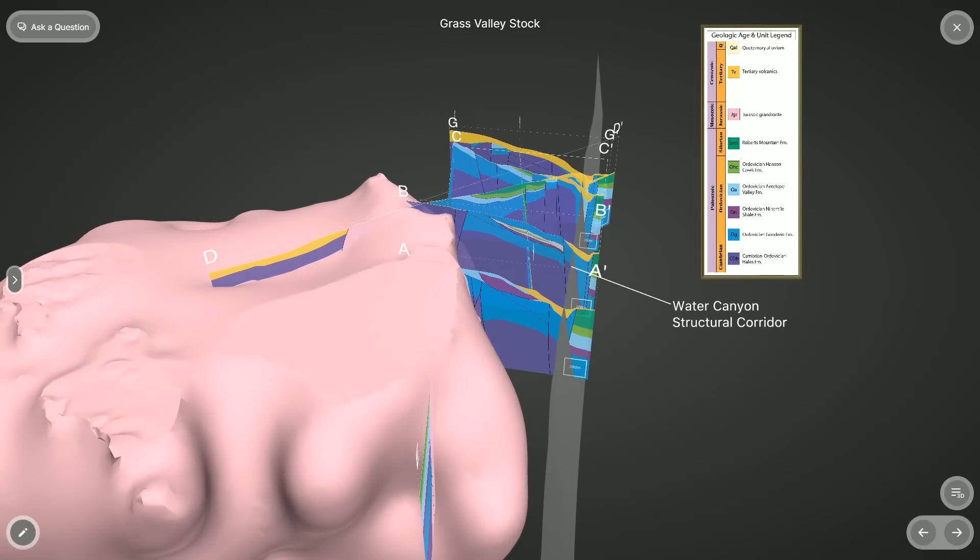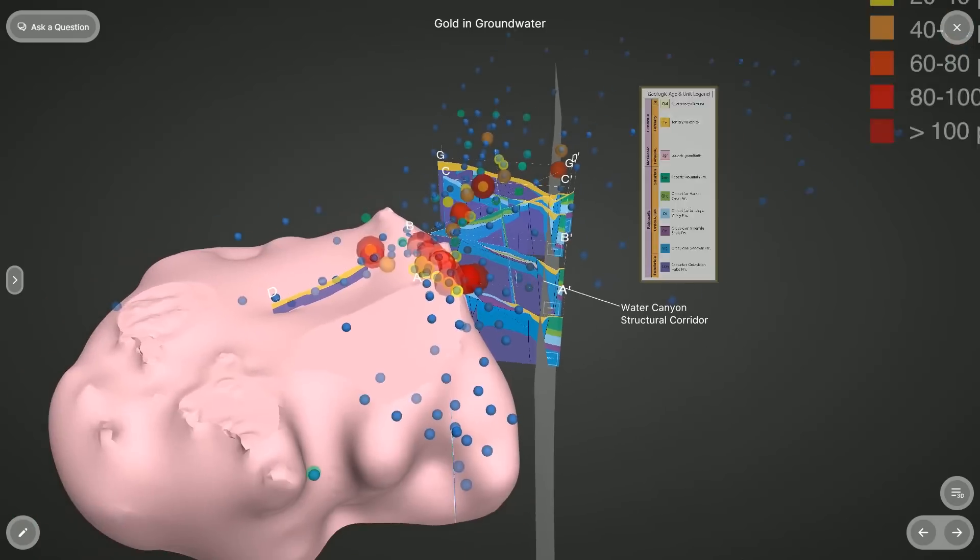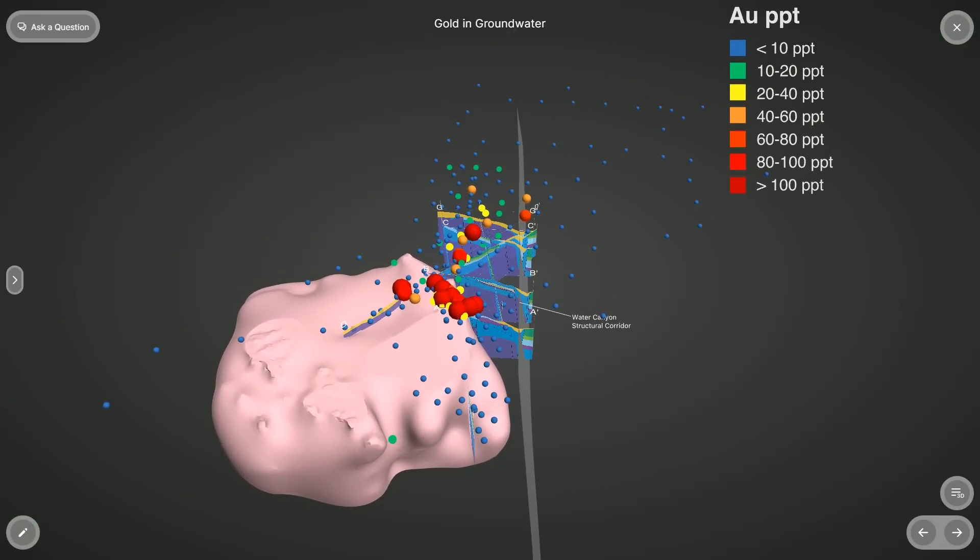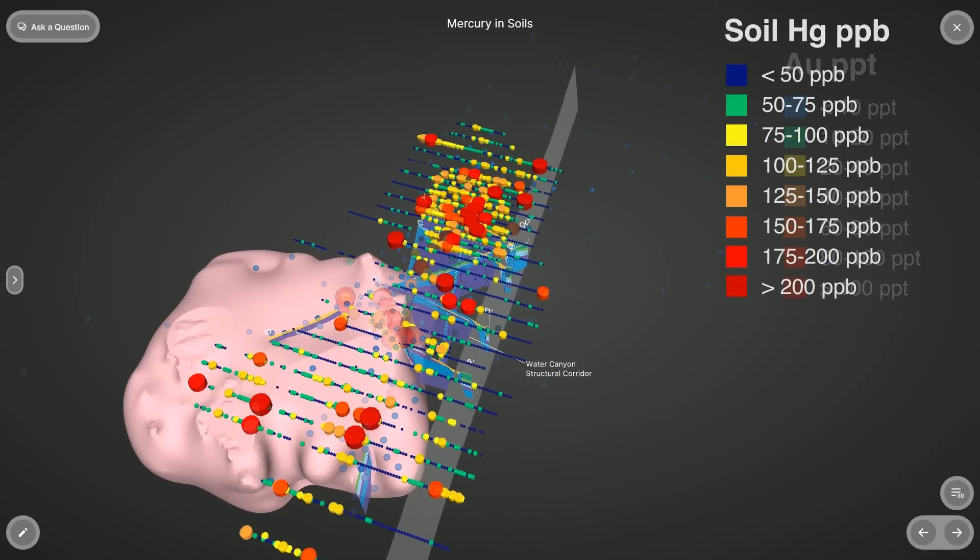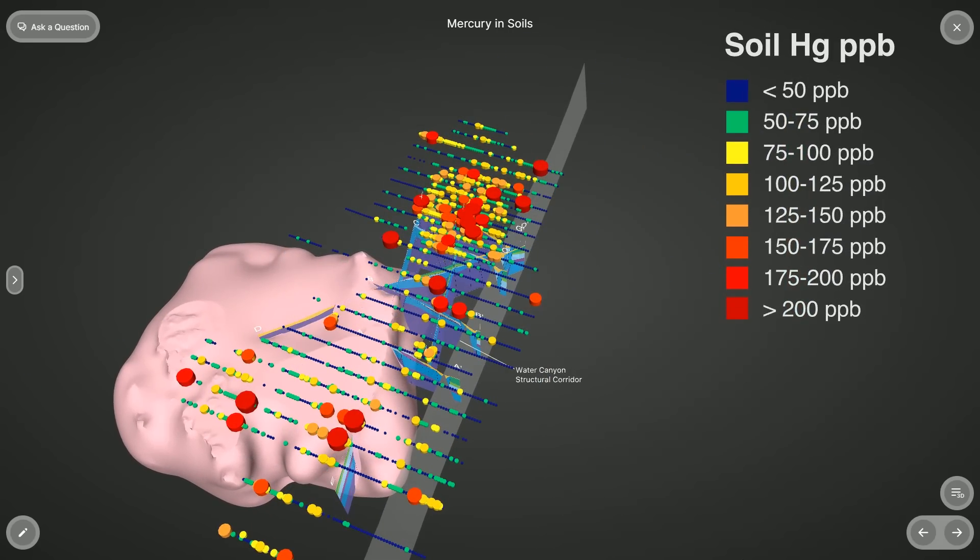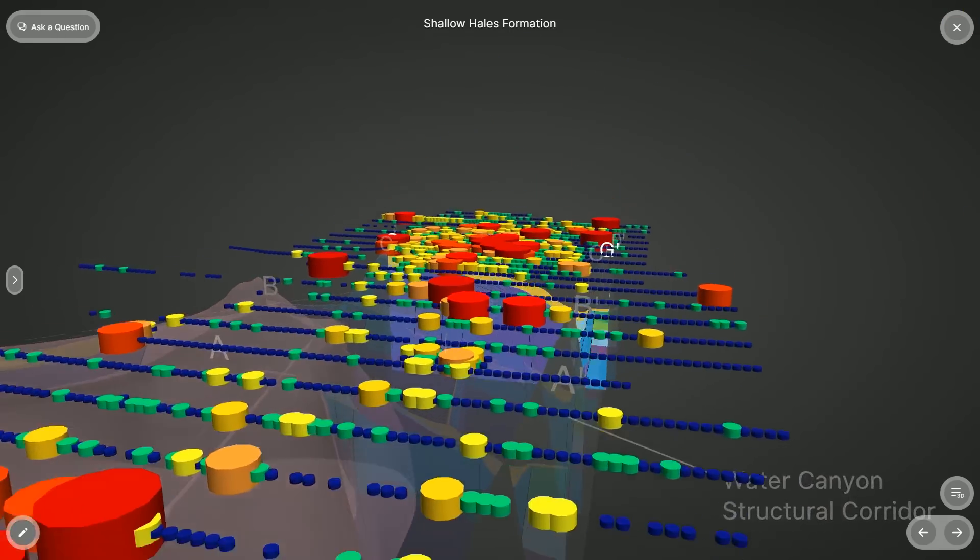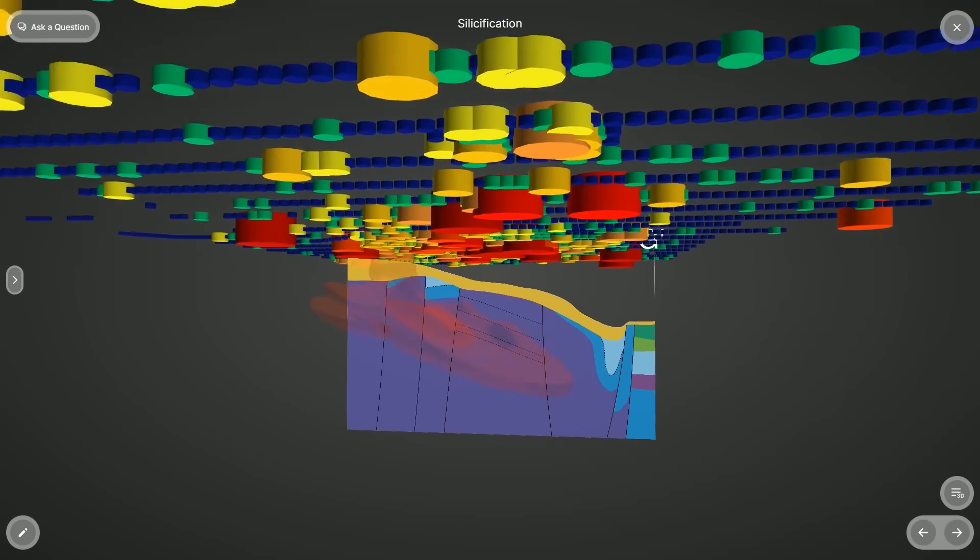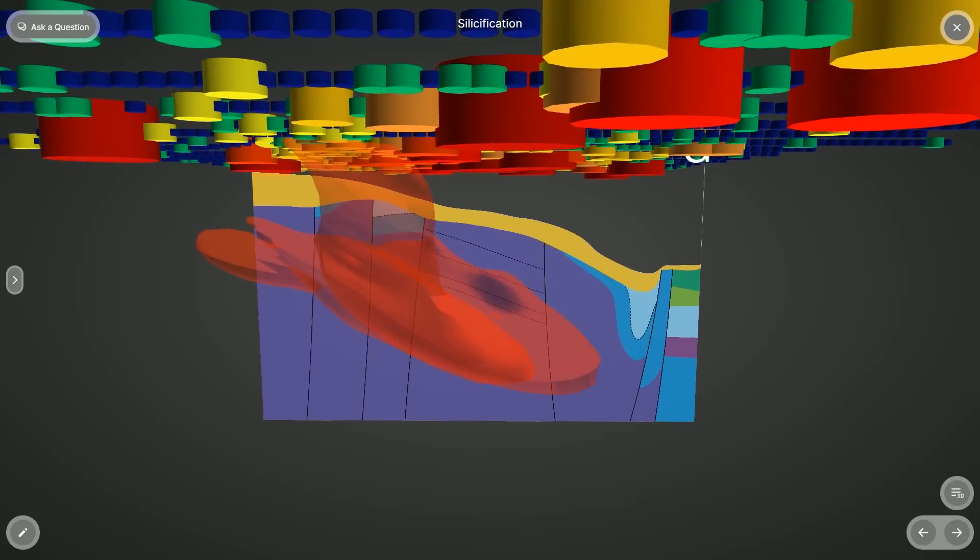Where these features come together at the project, we see evidence for Carlin type mineralization in the highly anomalous gold and pathfinders in groundwater, as well as in the soils in the northern part of the project, where the Hales formation comes closest to the surface, which is also the area where we've encountered the most extensive and intense silicification in our drilling to date.